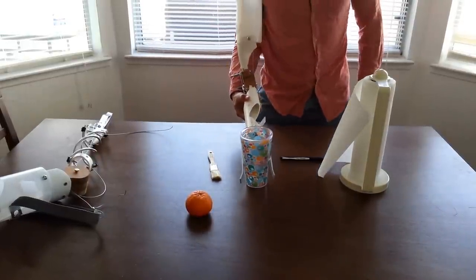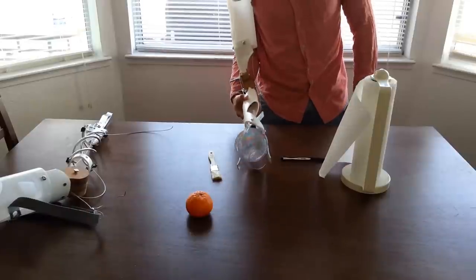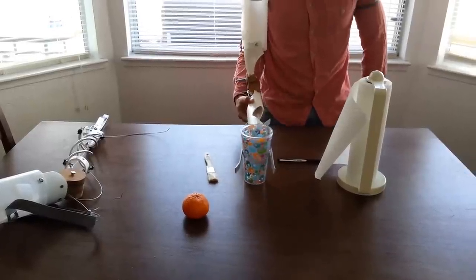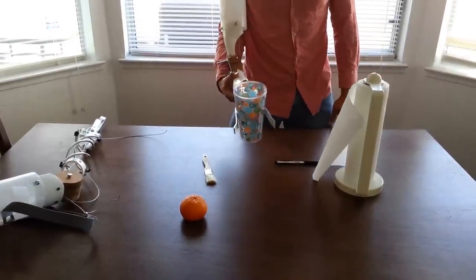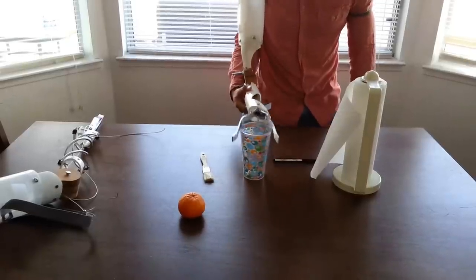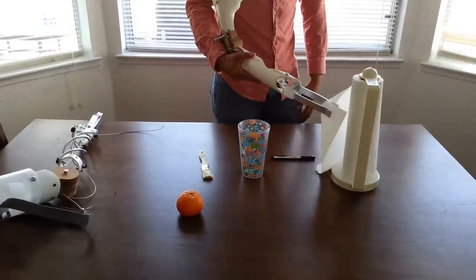And then you can also grab cups. So it adjusts to different openings. There you go. So you're able to grab stuff without tipping the water. It adjusts to different openings which is pretty good. You're able to grab small items like paper towels.